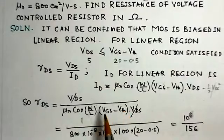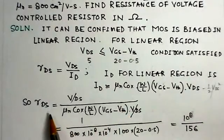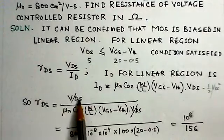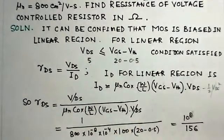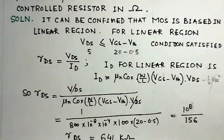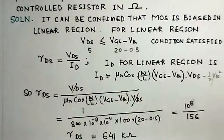The value of RDS is VDS over ID. VDS cancels from numerator and denominator. Now we can substitute the values of the parameters as given.